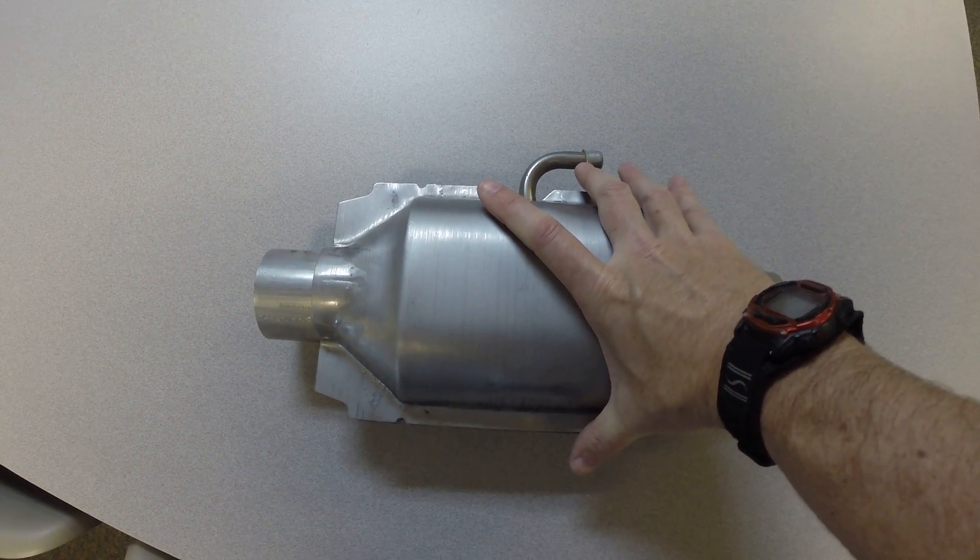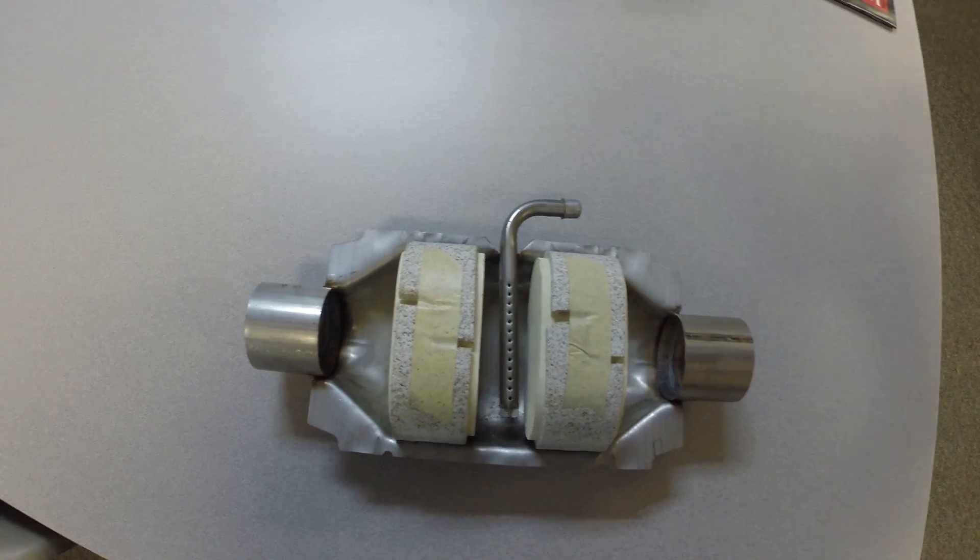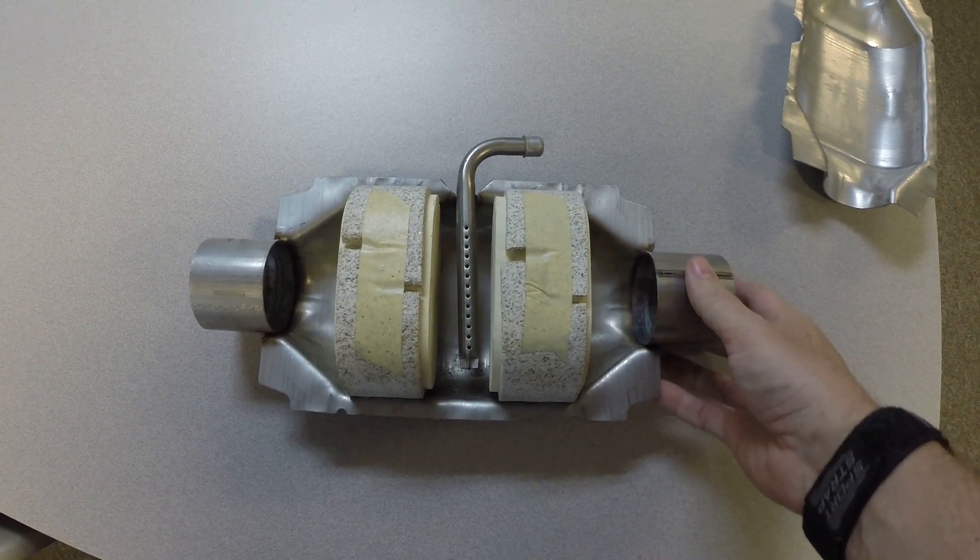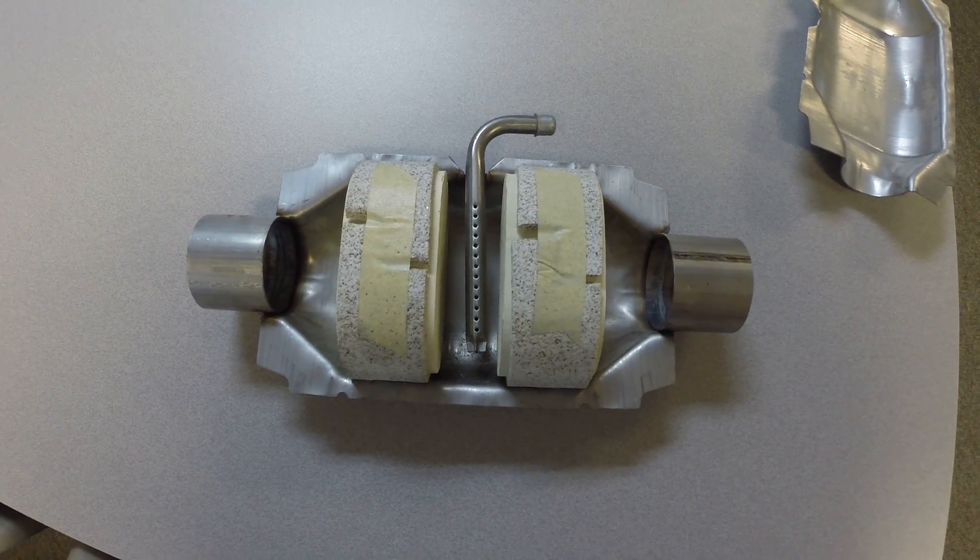This one here is one that we can actually take apart and look at the inside, so that's what we're going to do. We can take the cover off and we can look inside, and inside of this catalytic converter it's going to look pretty much like most catalytic converters on the inside.